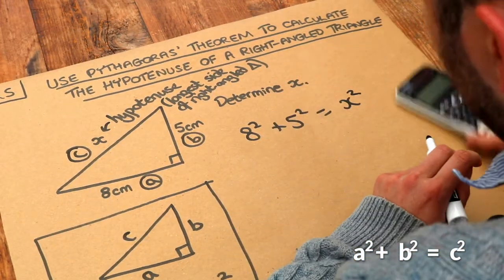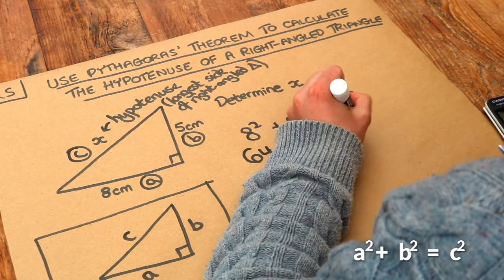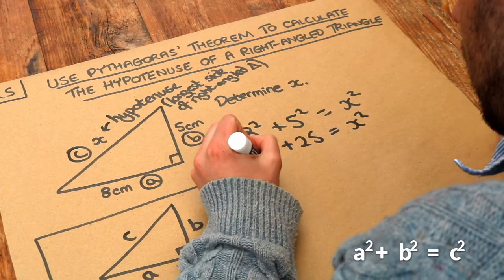So let's just simplify the left-hand side of the equation. We've got 64 plus 25. And if we add those together, we get 89.